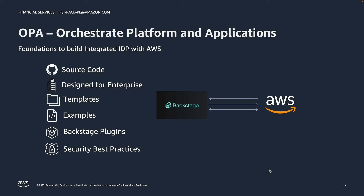OPA on AWS is an open source solution to help customers build their internal developer platform and integrate with AWS. This solution was built and designed for enterprises and intended to be customized so it can meet the tooling and standards of a particular company. The solution provides complete source code, templates, examples, and plugins required to integrate with AWS. It also adheres to security best practices and segregation of access control.